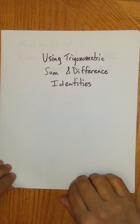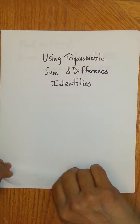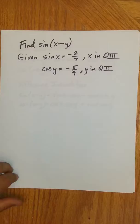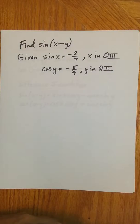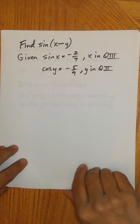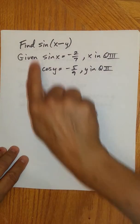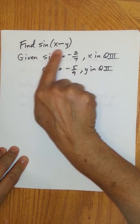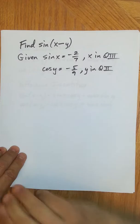Hello. In this video, we're going to look at using trigonometric sum and difference identities. So let's suppose you're asked the question: find sine of the difference of two angles, x and y. They give you some information about sine x and cosine y. What we want to do is use the trigonometric identity for sine — the difference of two angles.